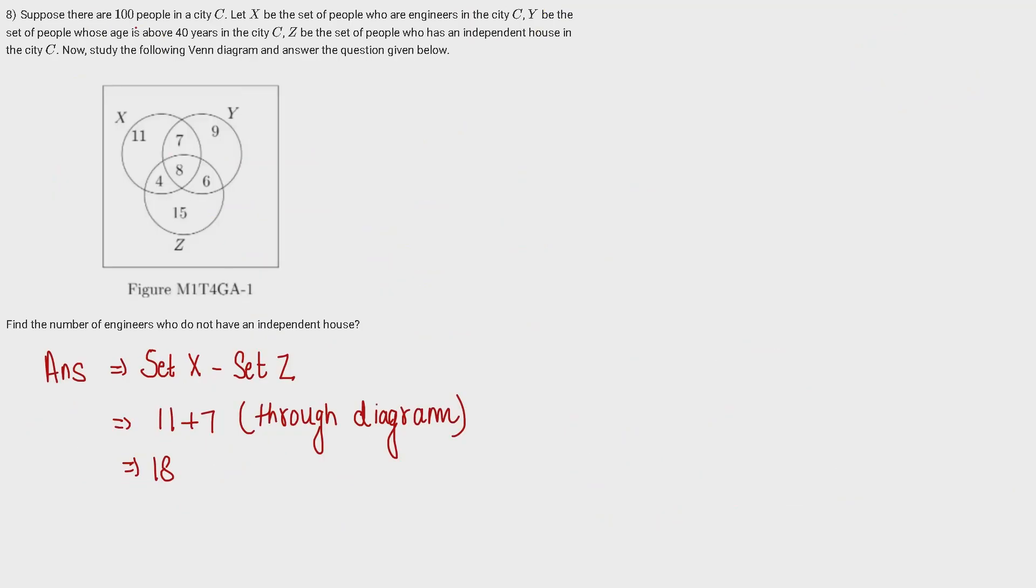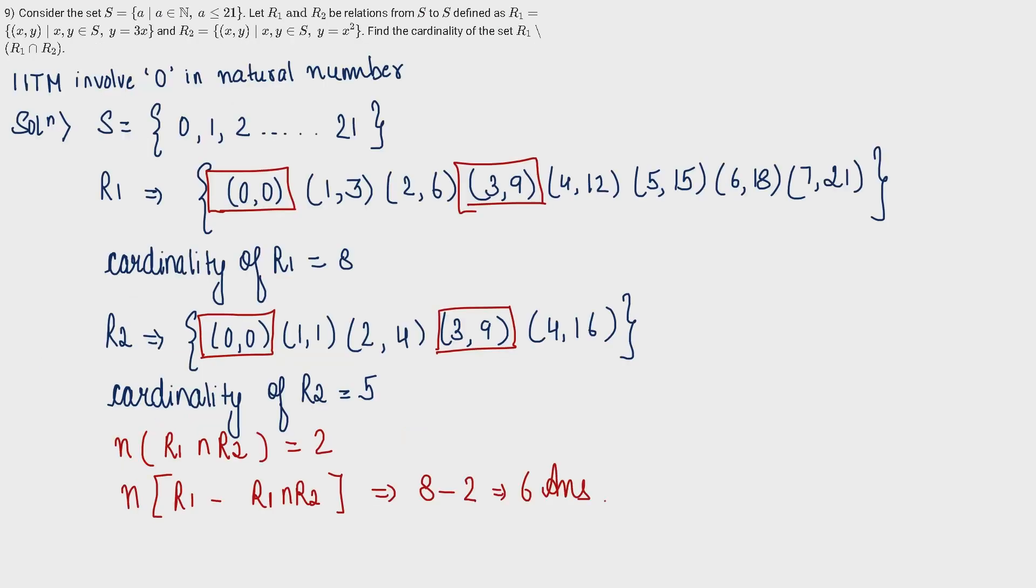Now question number 8. In a city there are 100 people. x are the number of people who are engineers, y are the people who are above age 40, and z are the people who have their own houses. I need to find the number of people who are engineers and don't have an independent house. Therefore I need the values of x excluding z values, meaning they don't have their own house. I don't need calculation here, it's clearly visible in the diagram. This is x complete, and this is z. I don't want z values, so basically I will discard 4 and 8. So the values of x which are not involved in z are 11 and 7. So the correct answer is 18.